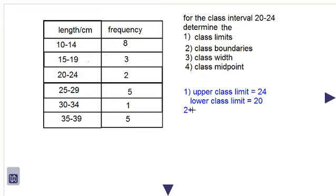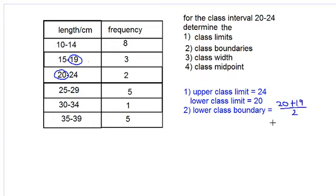Let's look at number two. We have to find the class boundaries, so what we have to do is determine the lower class boundary. What we do is we look at the lower class number 20 and we look at the next number before it, 19. We add 20 plus 19 and we divide that by 2, that is 39 divided by 2, which is 19.5. So this is our lower class boundary.